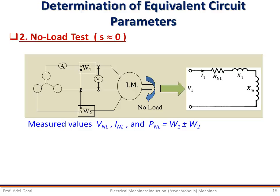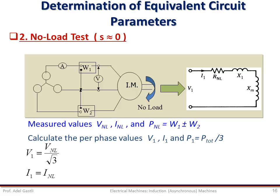The no-load power P_NL represents the total losses, including the stator copper loss and rotational loss, which also includes core and mechanical loss. From the measured line-to-line no-load voltage VNL, we can deduce the equivalent circuit phase voltage V1. The stator phase current is the same as the line current. The rotational loss can then be calculated accordingly. The equivalent no-load impedance is Z_NL = V1/I1, and the no-load equivalent resistance R_NL is determined as P1/I1².